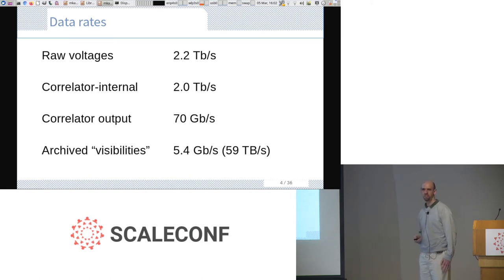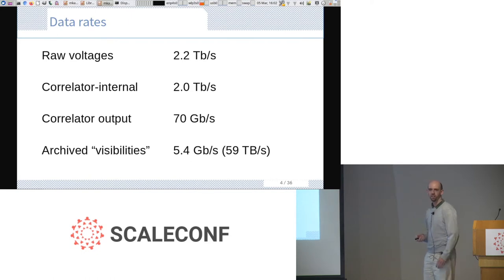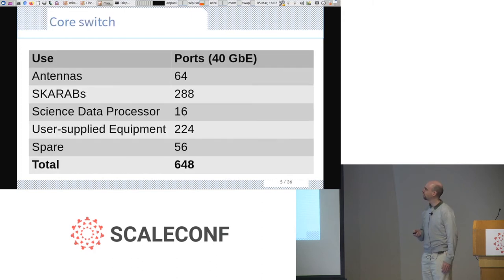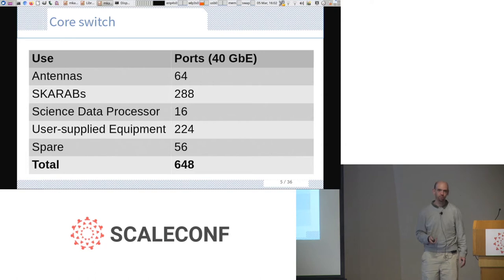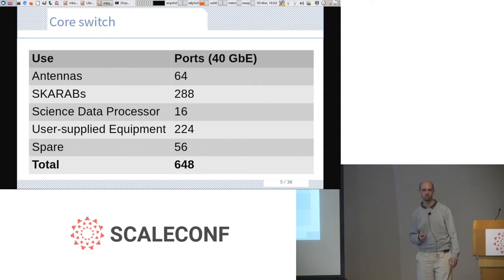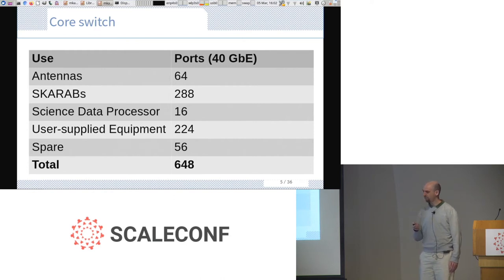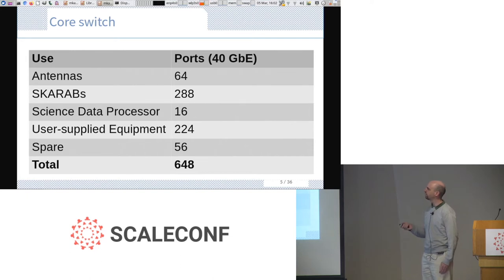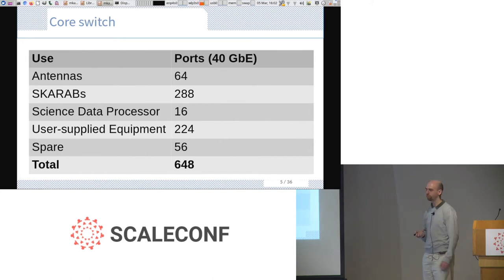It's quite a lot of data, but it's fairly simple — just big multi-dimensional arrays of complex numbers, without complex structure. That means we need a lot of networking. The core switch is a 40-gigabit switching system. We have allocations for different things: 64 antennas means 64 network ports.